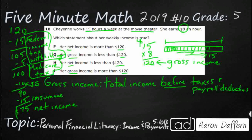That's her net income. So even though she earned $120, she gets $75. Her net income is less than her gross income — less than $120. Her answer is H.